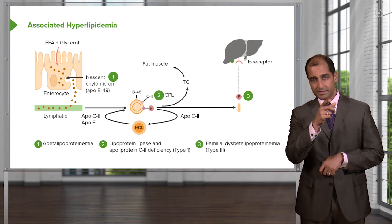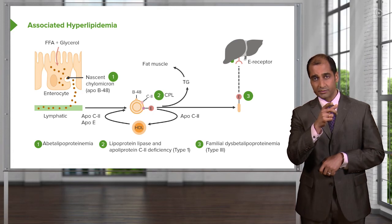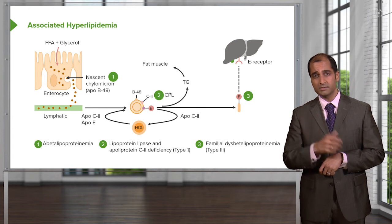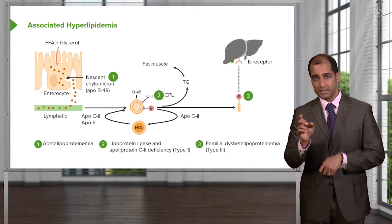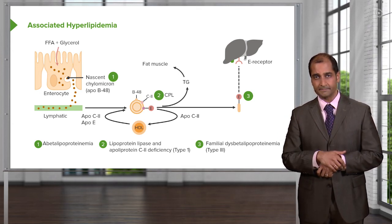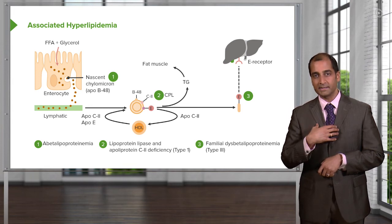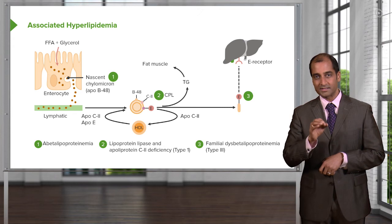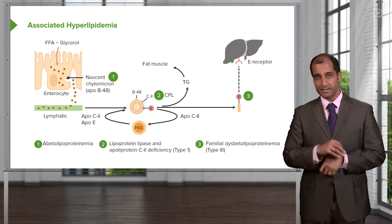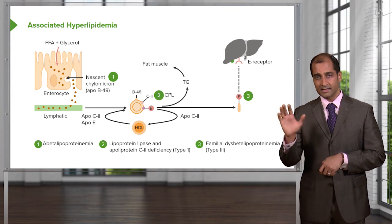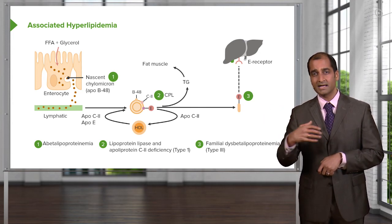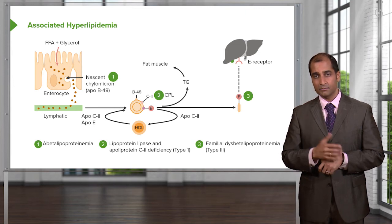The first lipase in biochemistry was pancreatic lipase in the lumen of the duodenum — keep that separate from capillary lipoprotein lipase (CPL). There is a third lipase: it only comes into play after fat has been stored, and that is hormone-sensitive lipase. That's something we'll look at in endocrinology.